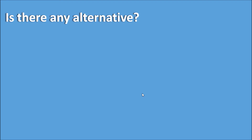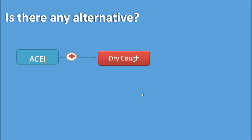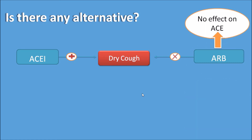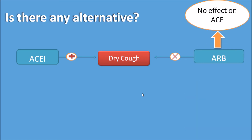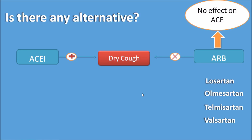Is there any alternative? Yes, of course. ACE inhibitors produce dry cough, but the related drugs ARBs — angiotensin 2 receptor blockers — do not produce dry cough. As these drugs do not act on the ACE enzyme but instead act on the angiotensin 2 receptor, they have no effect on ACE, and thereby do not produce dry cough. So drugs like Losartan, Olmesartan, Telmisartan, and Valsartan are few of the alternative drugs for ACE inhibitors in those patients who cannot tolerate these drugs due to development of dry cough.